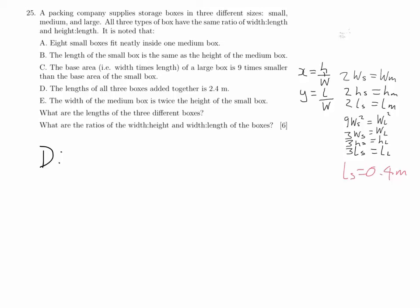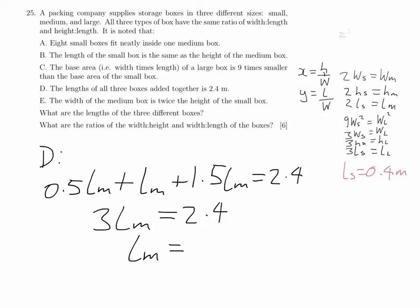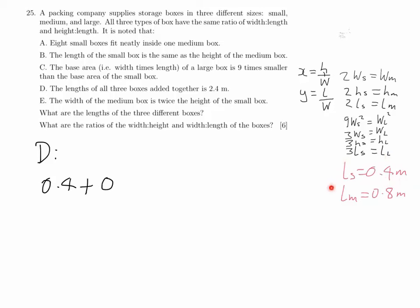Using statement D again to find the length of the medium box: the length of the small box is half that of the medium box, and the length of the large box is 1.5 times the length of the medium box. Solving that equation gives the length of the medium box as 0.8 metres. Then, since the total is 2.4 metres, the length of the large box is 1.2 metres.